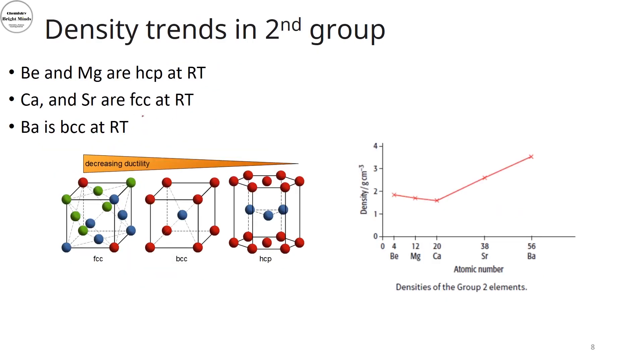Now, if I moved to the density trend, there's also irregularity in the density trend. So I expect them, it should have been all of them are increasing in the density down the group. But I have this drop with calcium. And the reason behind that,